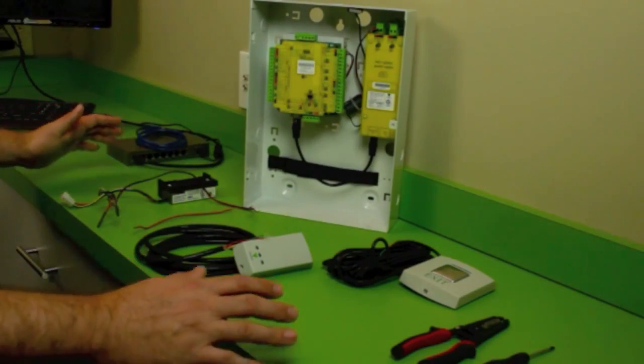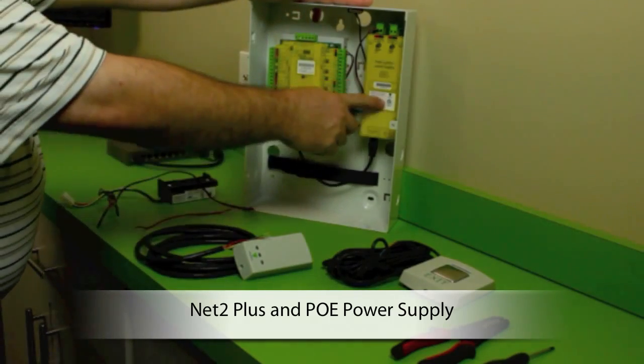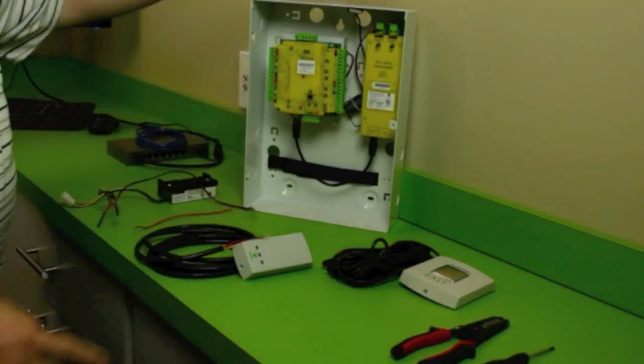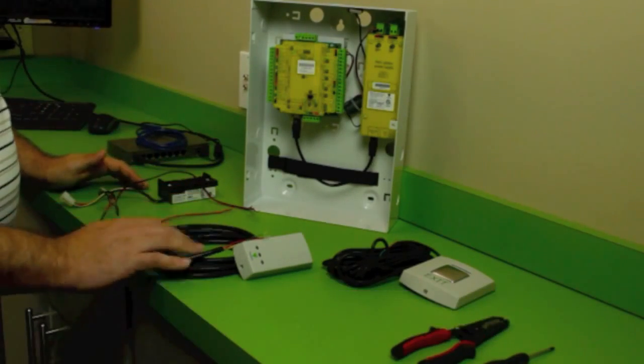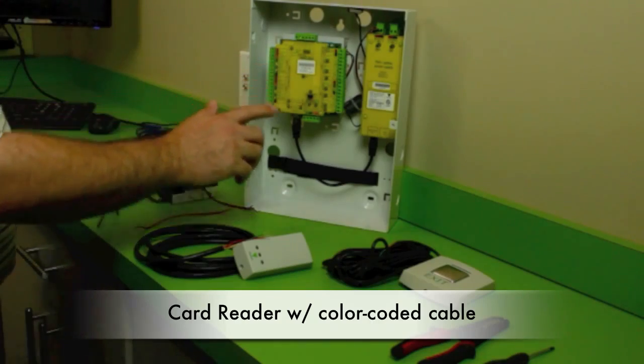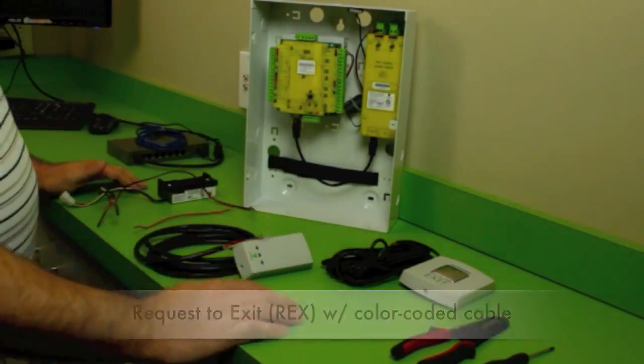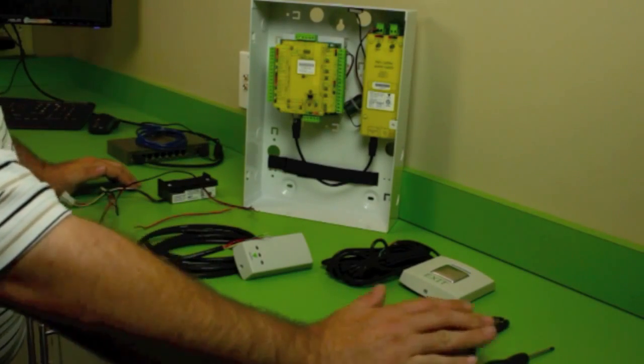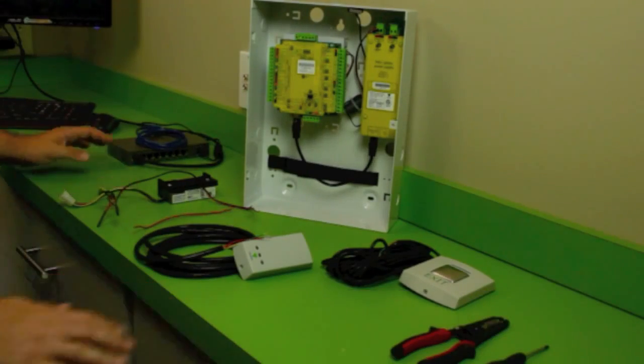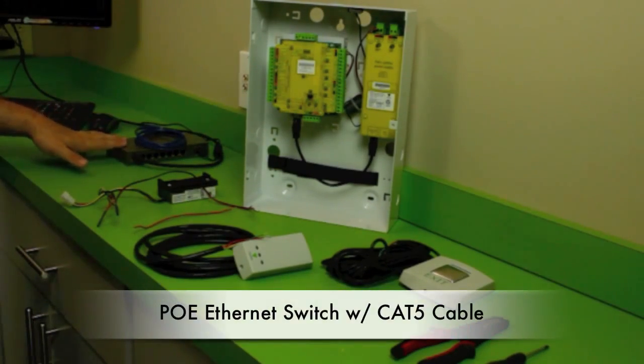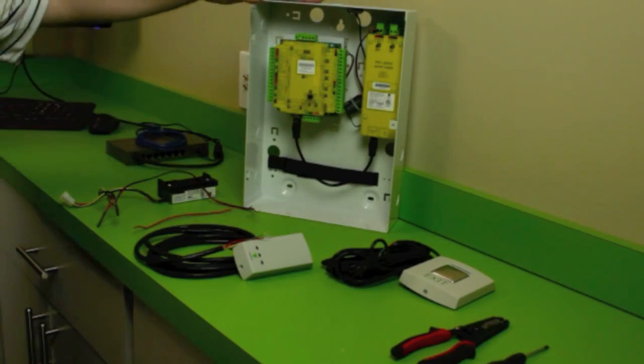So here are all the pieces that you need to get a door up and running. Main thing being your Net2 Plus board with your PoE power supply splitter. You have a strike with the wiring that would be coming from the door, your card reader that's color-coded to make it simple to wire into the Net2 Plus, as well as your push to exit button color-coded as well. You also only need a pair of wire strippers and a small flathead screwdriver to screw the wires into the controller. And lastly, you'll need a power over ethernet switch as well as a cable that would run from the switch to the controller.